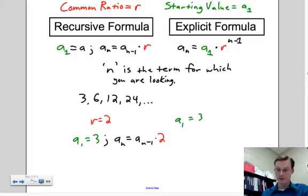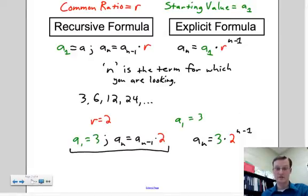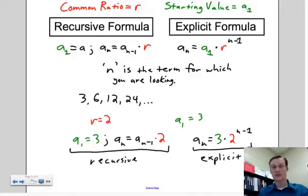The explicit formula: to find the nth term, start with 3 and multiply it by 2 to the (n-1) power. So aₙ = 3 · 2^(n-1). As weird as that looks, this is the recursive and this is the explicit. When you have something unusual like this, the best way to practice is just to practice it over and over. Take examples, work them, rework them until you get the hang of it.